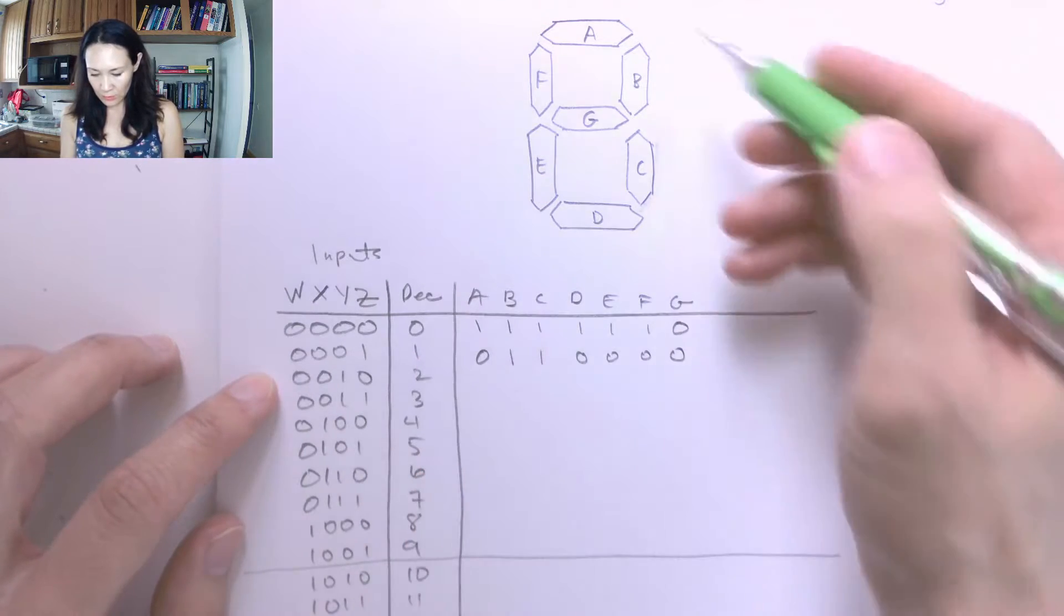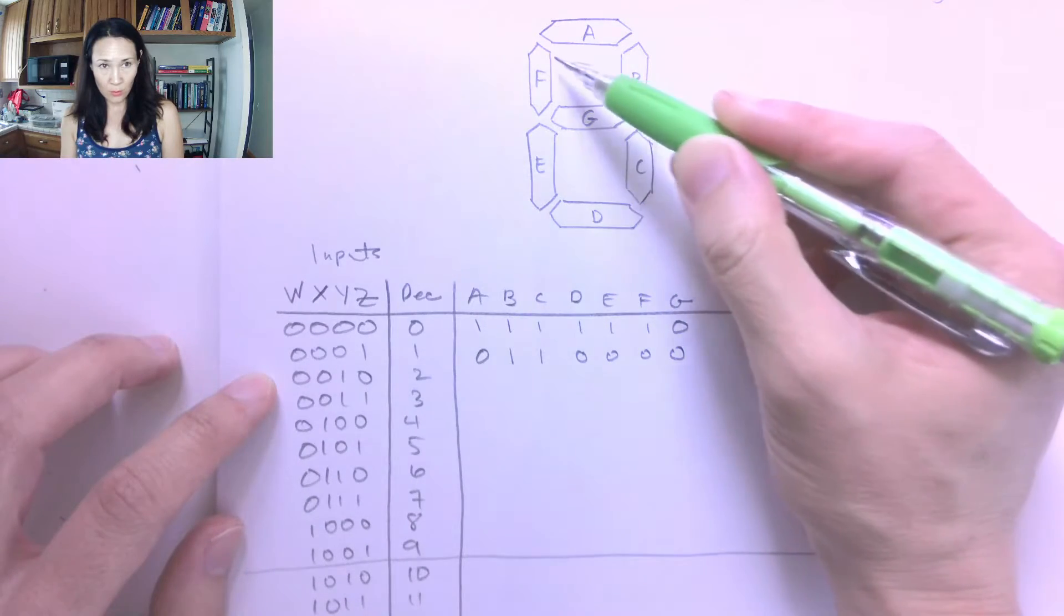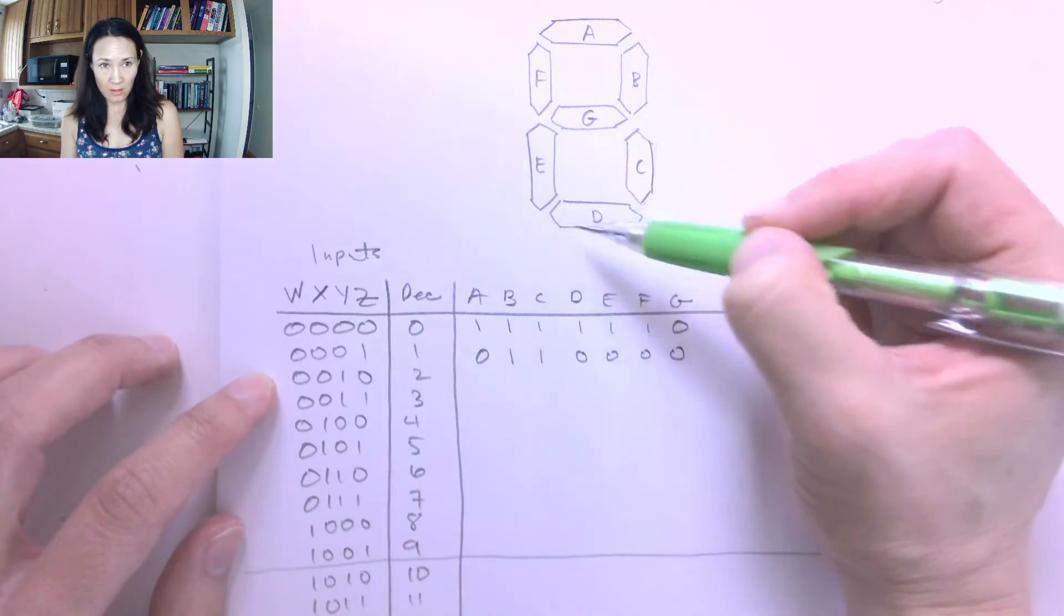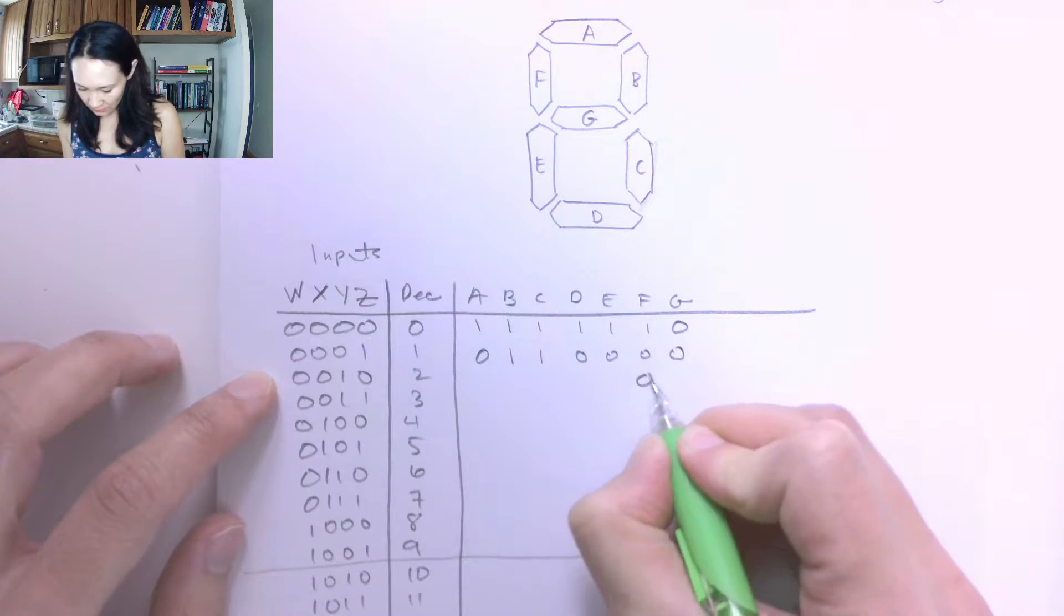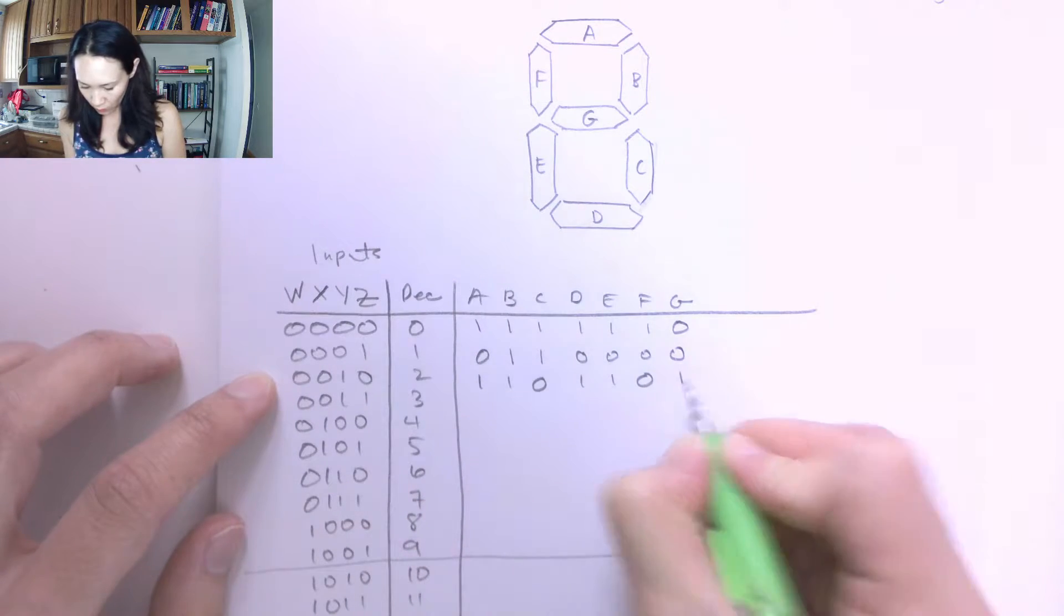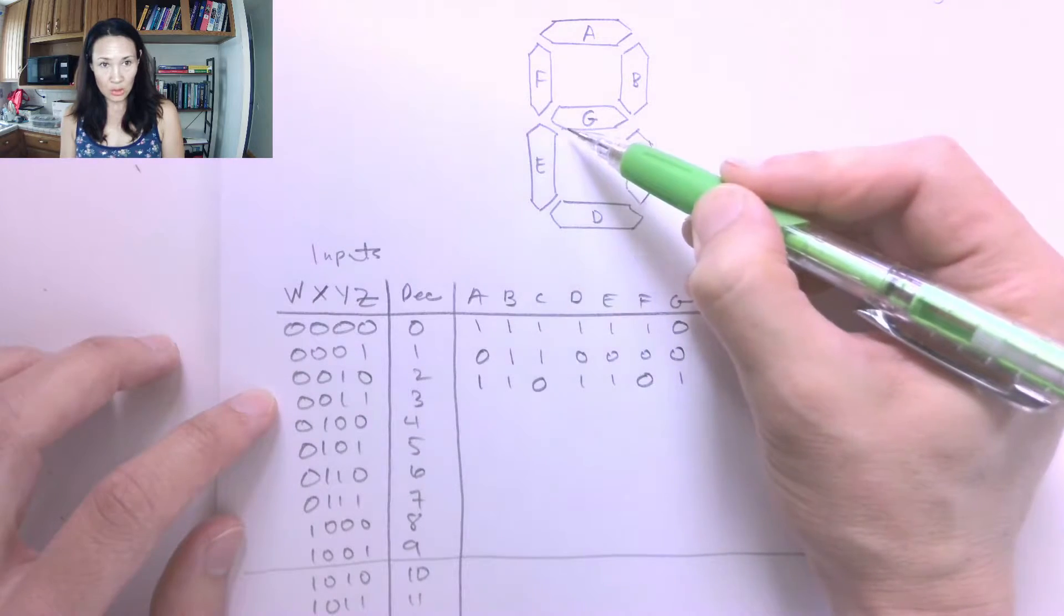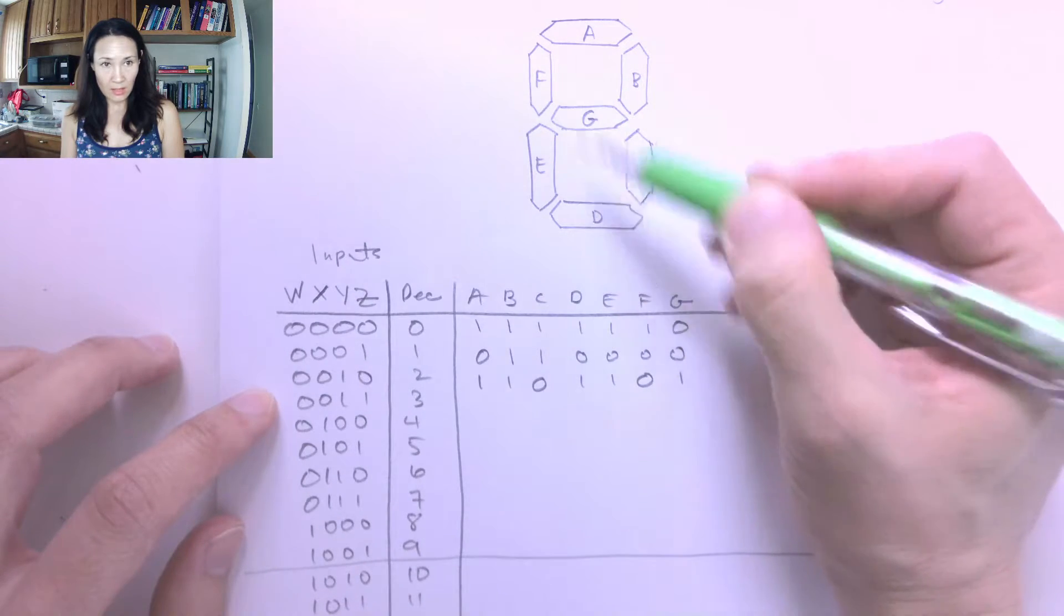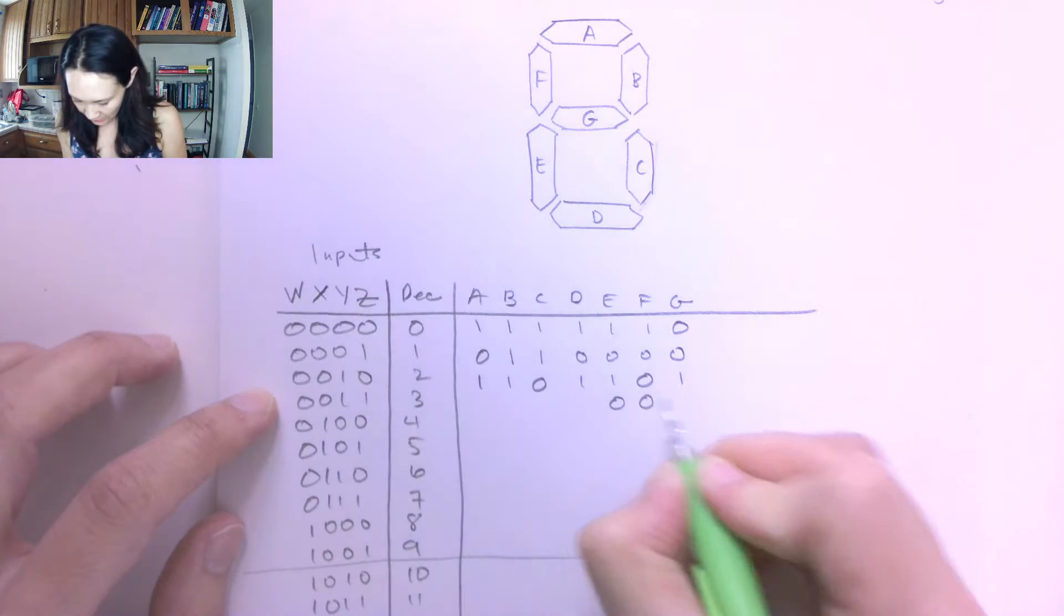For the number 2, 2 is going to have this shape here. So we want all these LEDs to be on, but we want F and C to be off. So F is going to be 0, C is going to be 0, and the rest of them are going to be 1. For 3, I want A, B, G, and C, D on, and I want F and E off. So E and F, I'll put 0, and everywhere else we want to be 1.